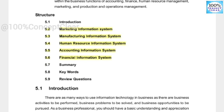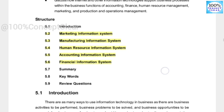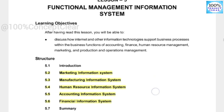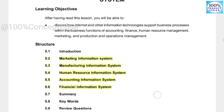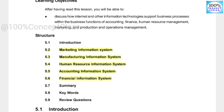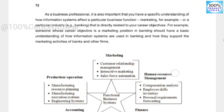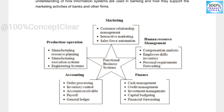We will discuss five departments here and how the information system works in each department. In these five types, we will take a chance of 6-10 marks. Let's take an introduction. This is the five functions — the functional business system. We will take five departments: first is marketing, next is production and operation, that is manufacturing, next is human resource management, then accounting and finance. We will see how the functional business system works in each department.